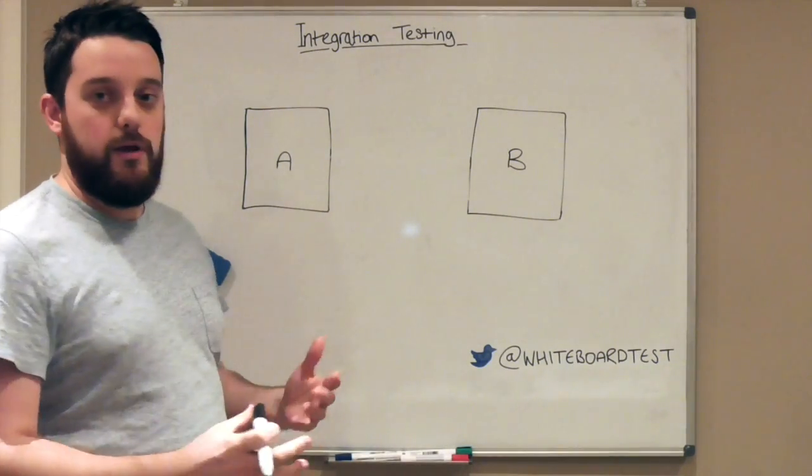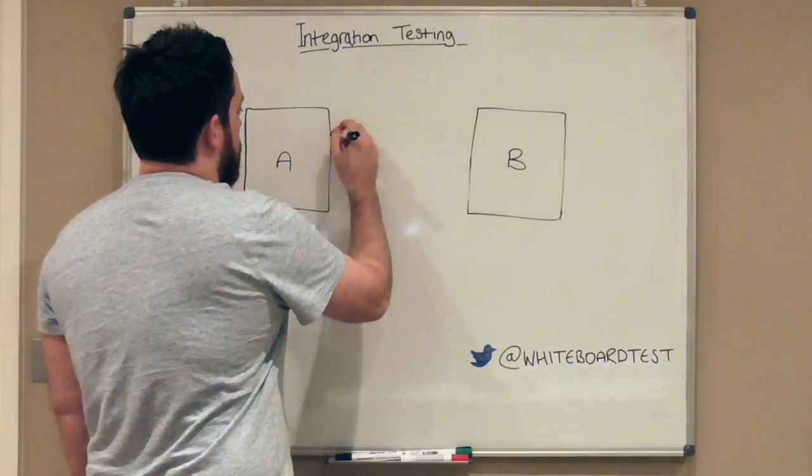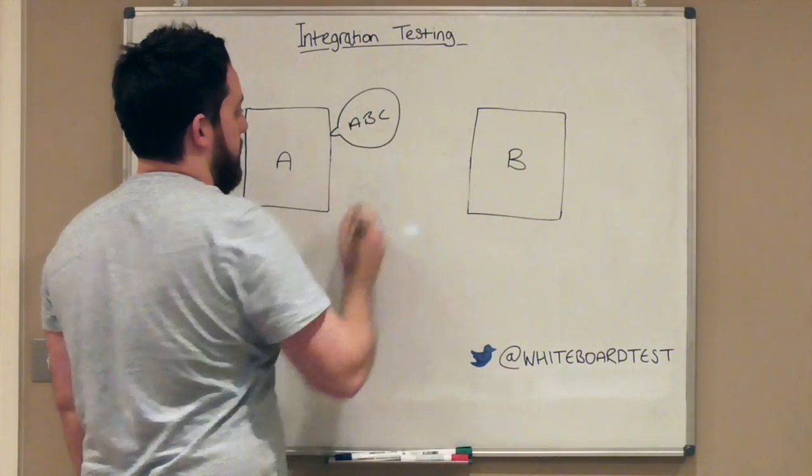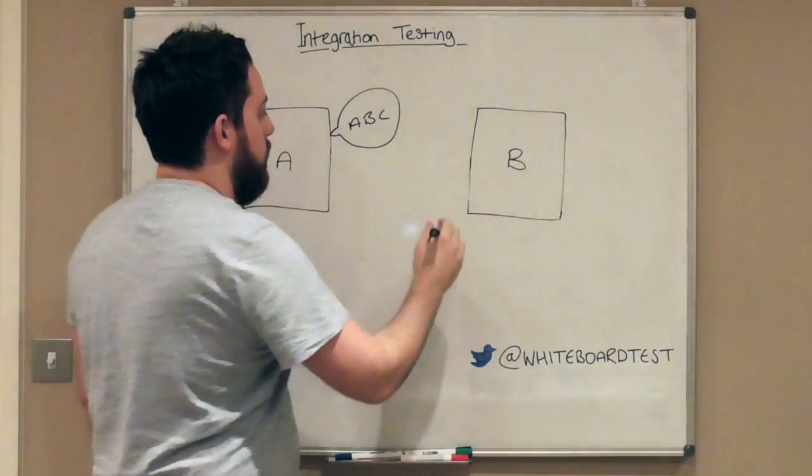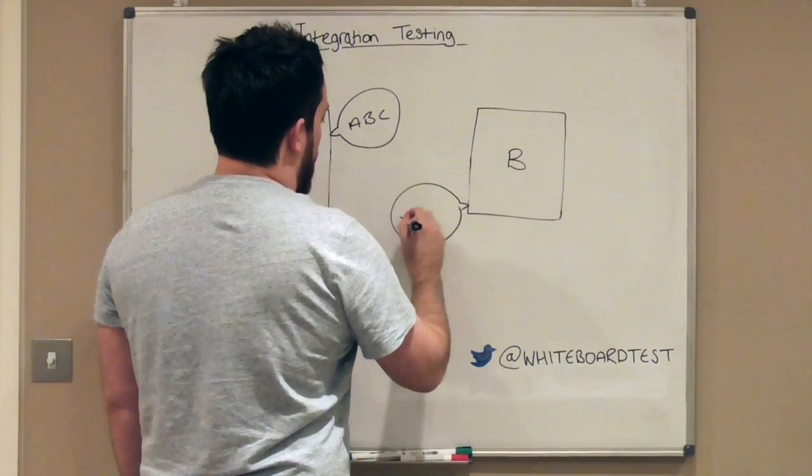So I started thinking, let's just say these have a relationship. In this instance, it might be a communication relationship. So A talks. A talks, and A likes to talk in A, B, C. That's how it likes to talk. And B also likes to talk. B likes to talk in X, Y, and Z.